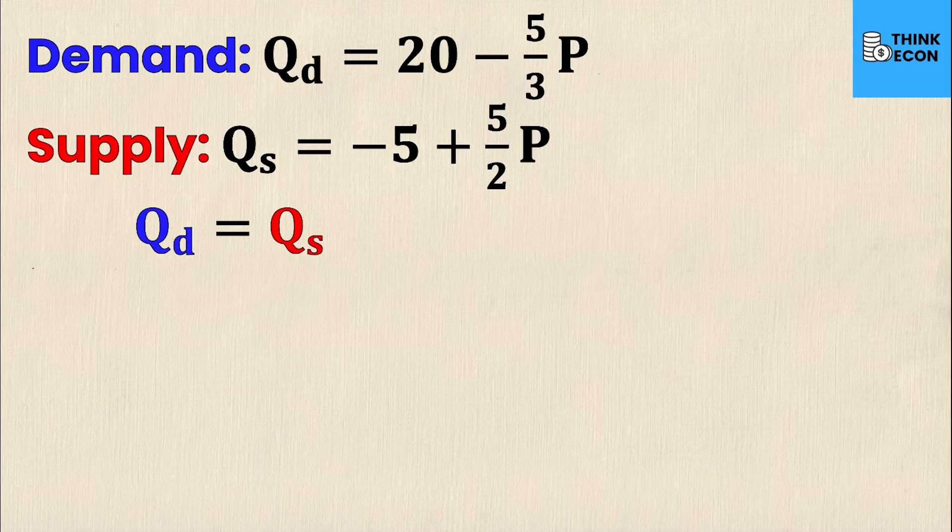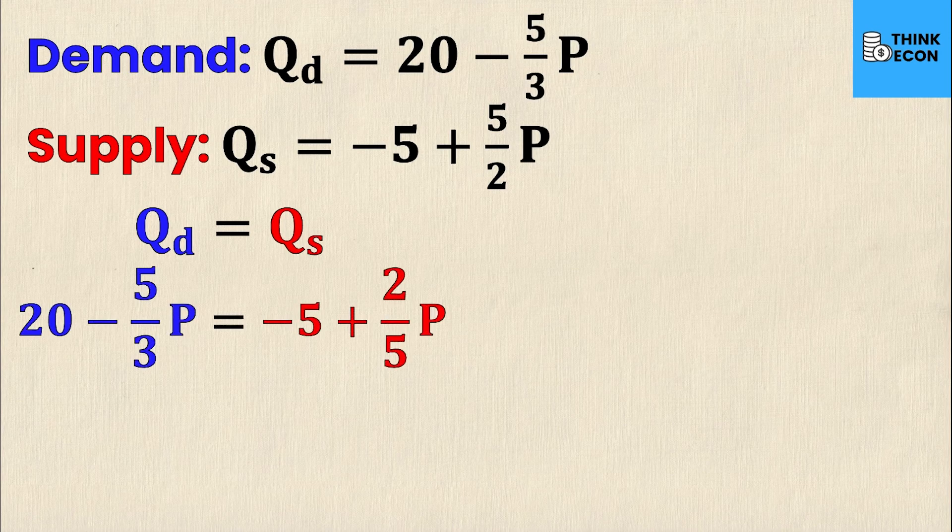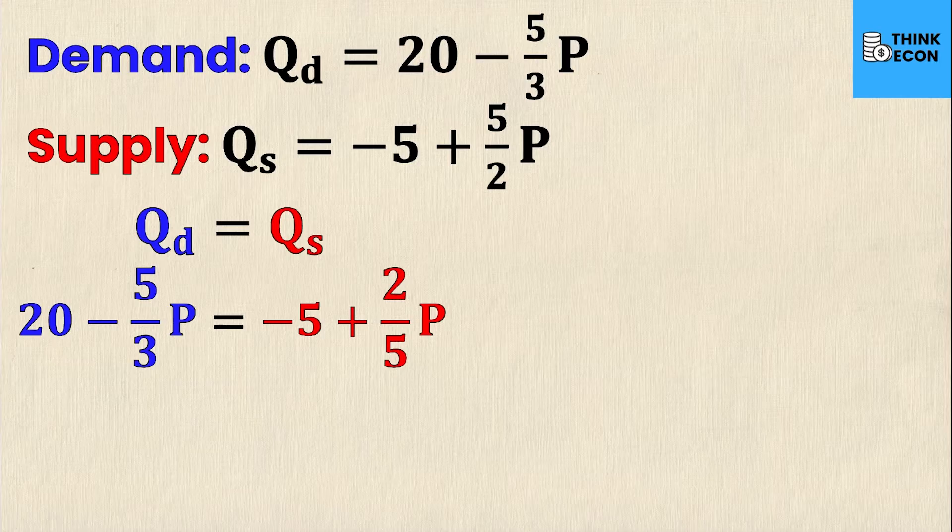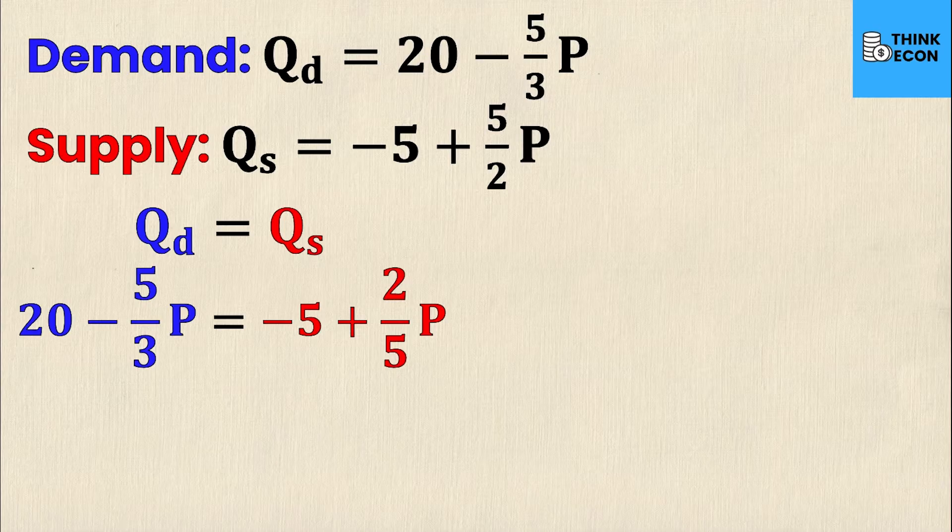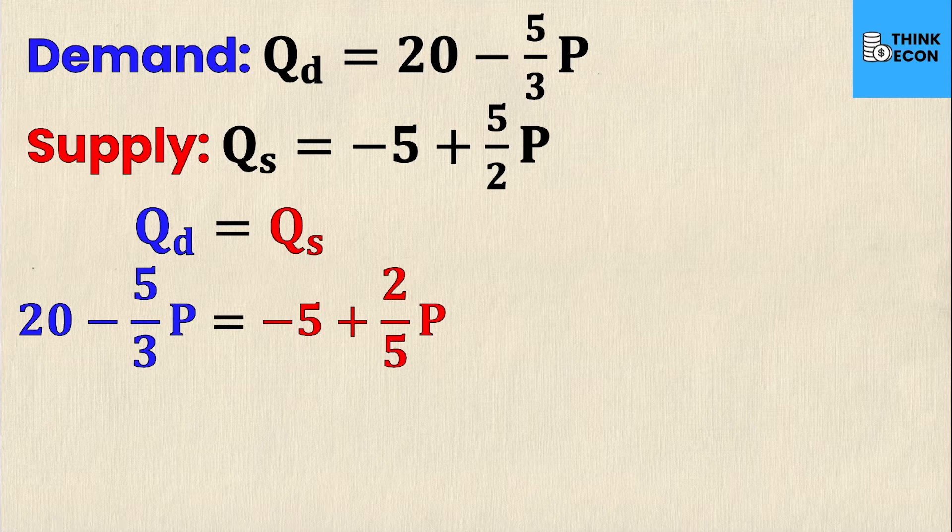So if QD equals 20 minus 5 over 3P and QS equals negative 5 plus 5 over 2P, then I can sub these in on their respective sides of the equal sign. I have quantity demanded in blue and quantity supplied in red just so you can see that all I did was sub in the two equations on each side of the equal sign.